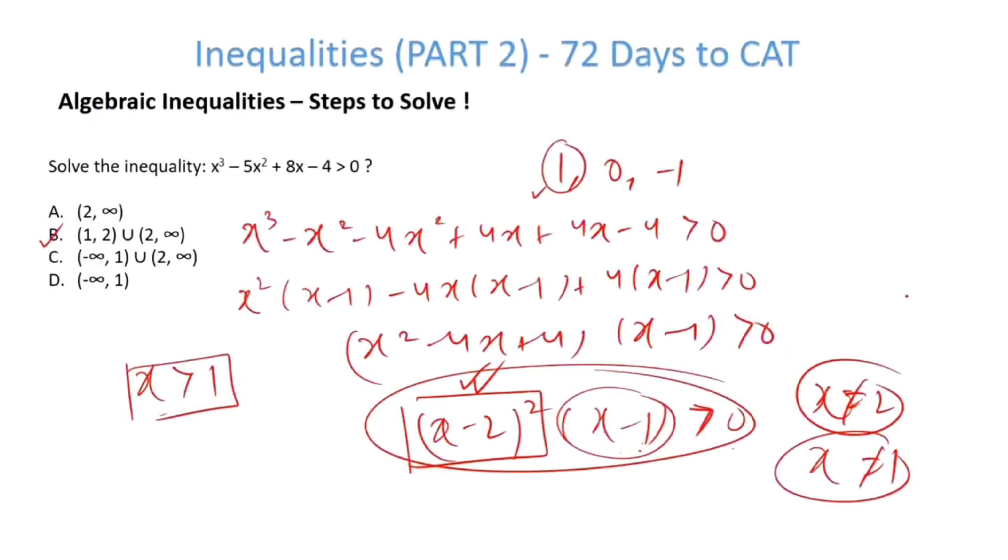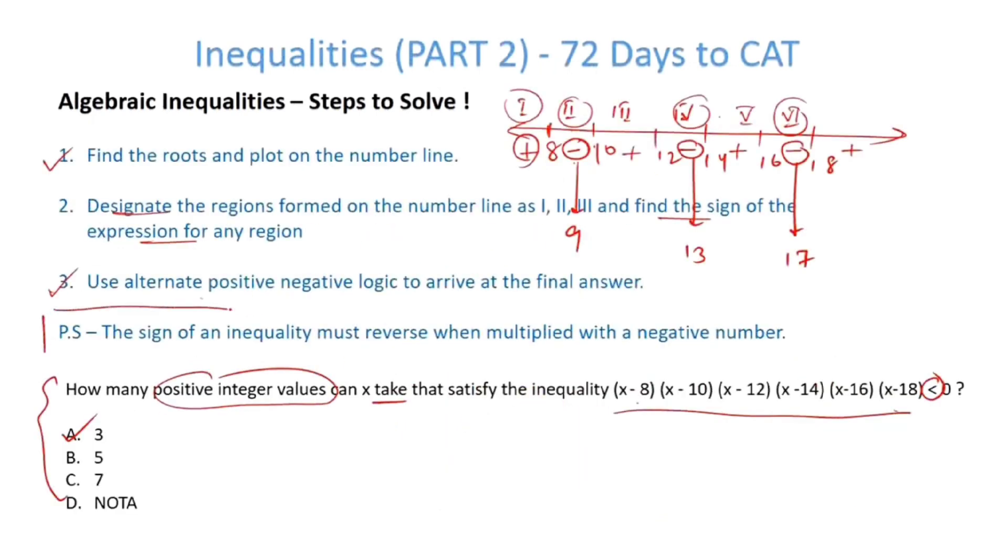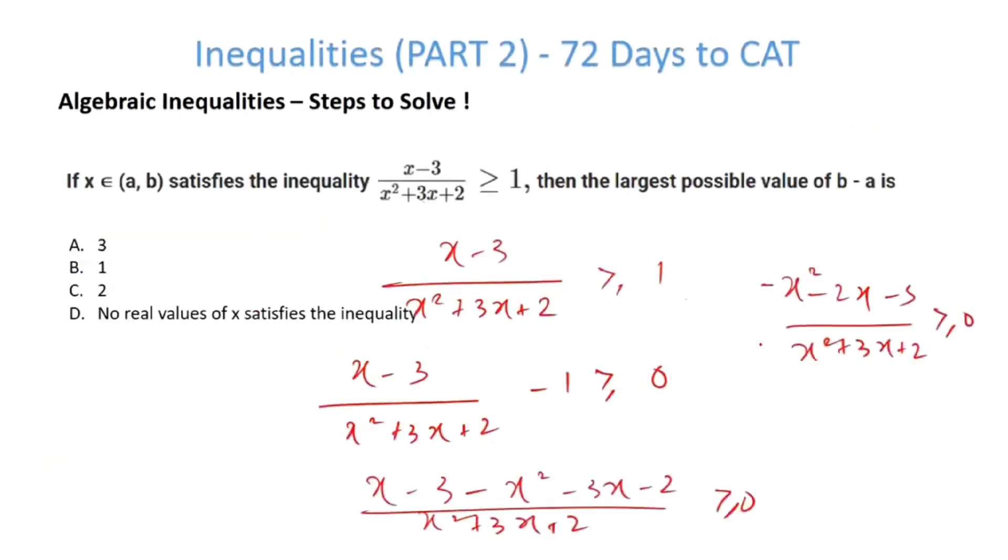Now, have a look at one very important point I have written here. The sign of an inequality must reverse when multiplied with a negative number. I am going to do this. I multiply this inequality with minus 1. What will happen? Sign will reverse. So, this becomes x square plus 2x plus 5 x square plus 3x plus 2 less than equal to 0.